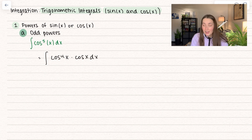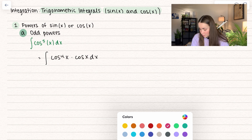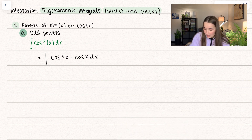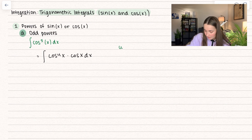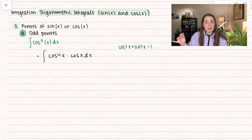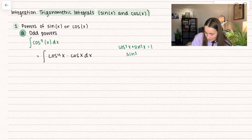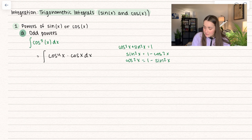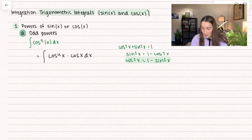The reason we're doing this is because we're going to use a trig identity — the Pythagorean trig identity. We have cosine squared of x plus sine squared of x equals 1. We can solve for either of these. I can solve for sine squared of x by subtracting cosine squared of x over. Same thing with cosine squared — if I subtract off sine squared, I get what it's equal to. We're going to use the cosine with the even power.